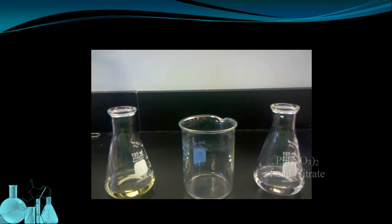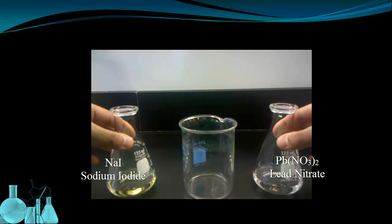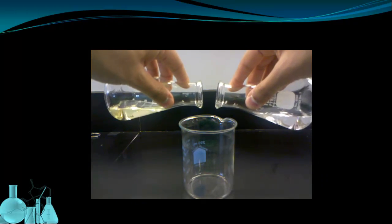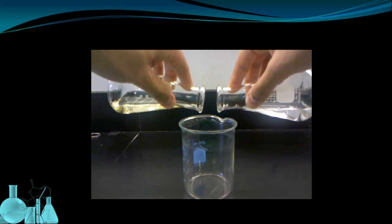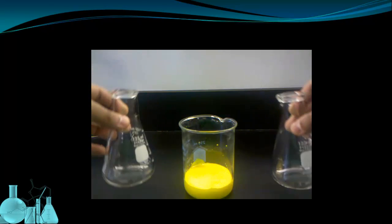Here we have two aqueous solutions, one containing lead nitrate and the other containing sodium iodide. These are both solutions made by dissolving ionic compounds in water. When they are added together, you can clearly see that a new product forms. This bright yellow precipitate comes out of the reaction.